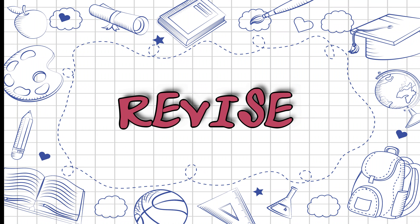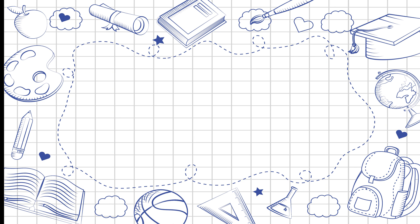Now let's quickly revise the table. 3 1s are 3, 3 2s are 6, 3 3s are 9, 3 4s are 12.